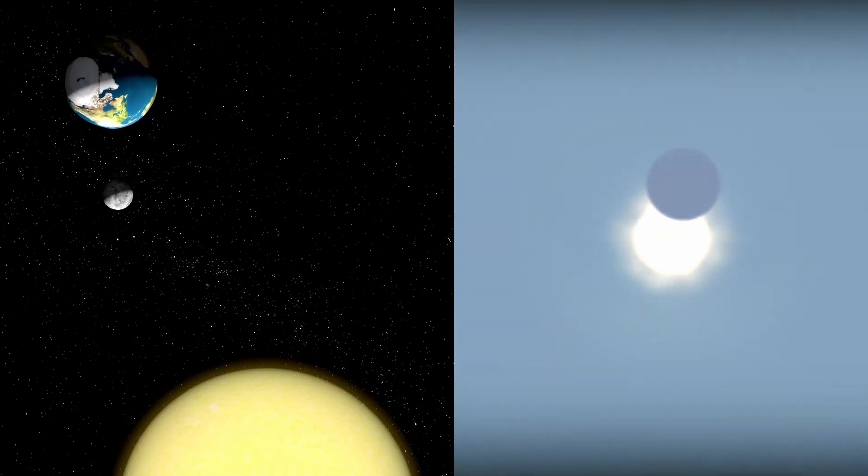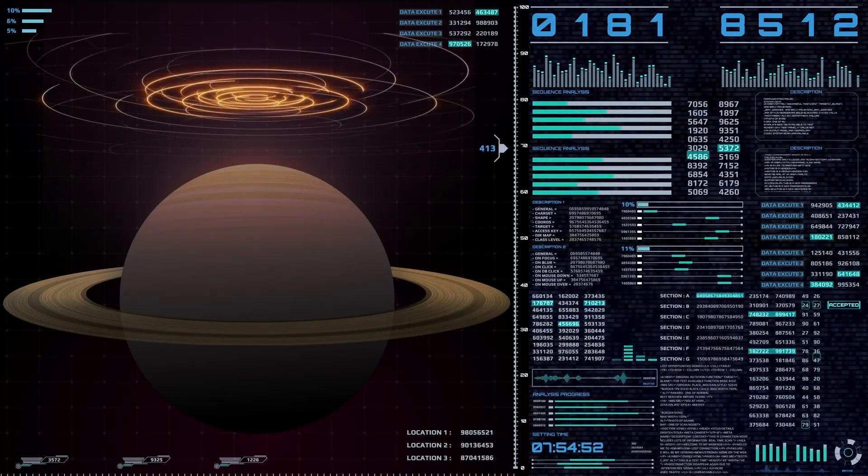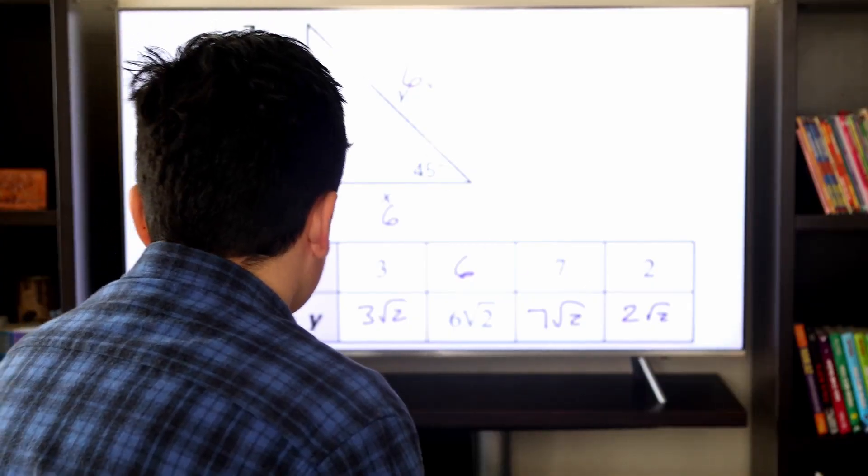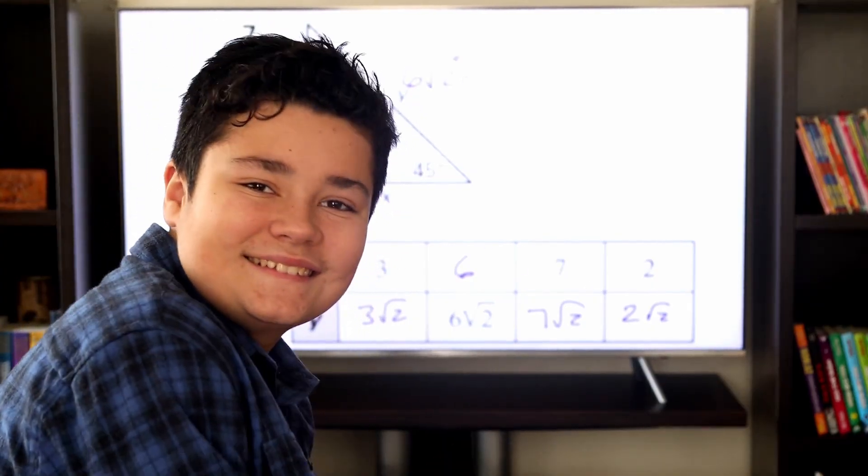This places it right in the middle of the era when the universe should have been almost entirely opaque. According to all our models, the light from a galaxy this young and small should have been swallowed up by the thick hydrogen fog around it.